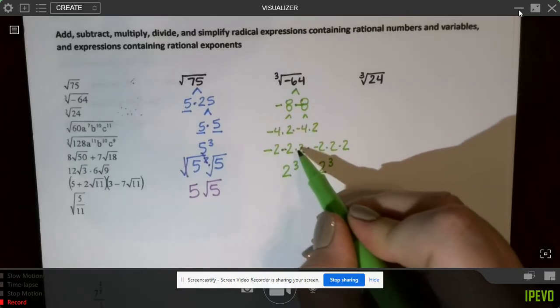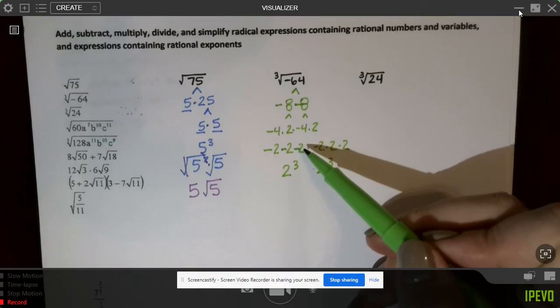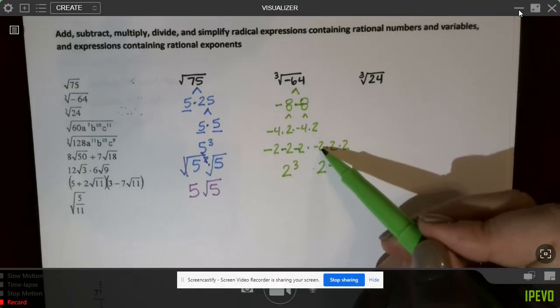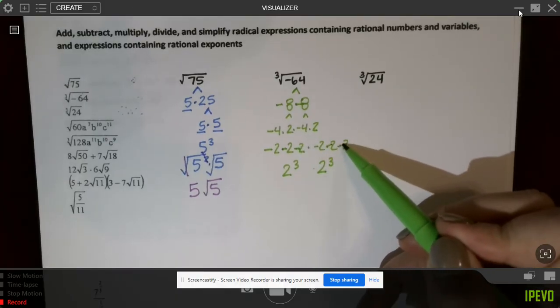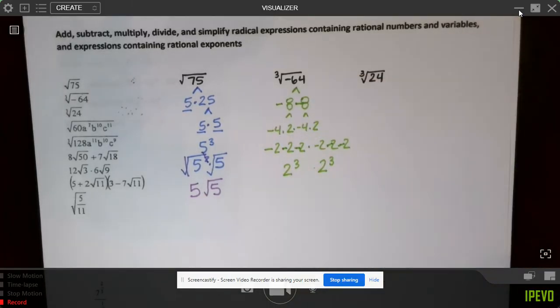Now, if I make all of these negative, it's still the same thing, because a negative and a negative is a positive times another negative is a negative, positive, right? So if we just make all of these negatives, we're going to still end up with the negative 64.